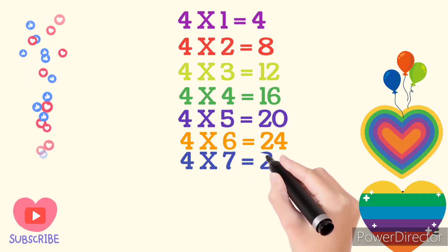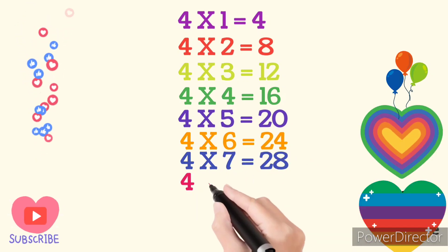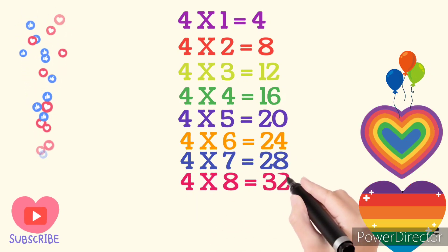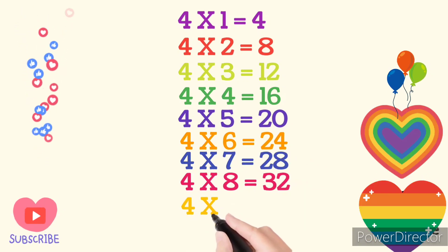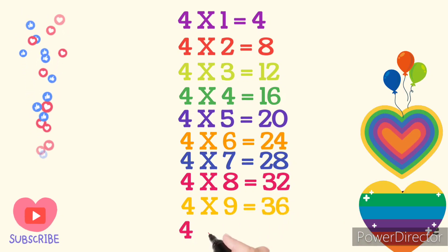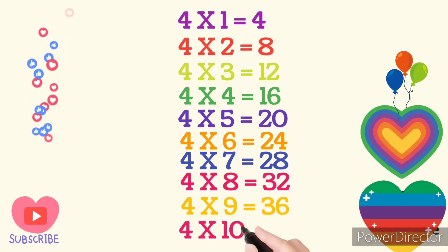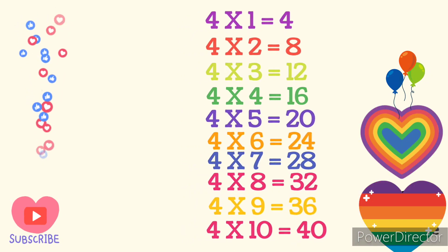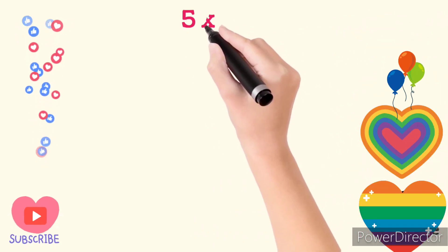4 times 7 are 28. 4 times 8 are 32. 4 times 9 are 36. 4 times 10 are 40. Table of 5.